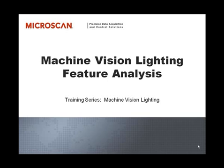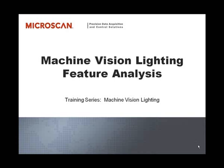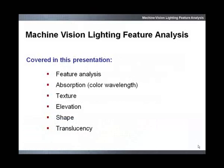Welcome again to Microscan's Machine Vision Lighting Training Series. This presentation discusses feature analysis. You'll learn about the features required to analyze a part for machine vision lighting. Understanding the features of a part is essential to determining what type of lighting will be required in an application. We will cover the five common object features and their properties.